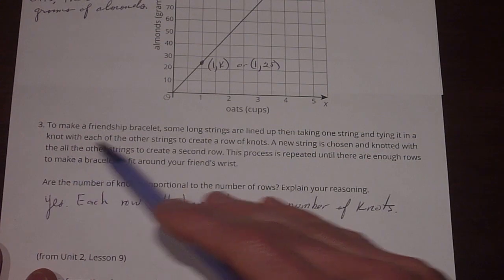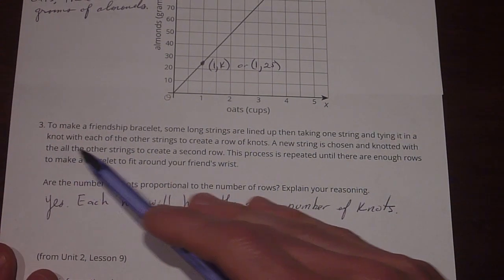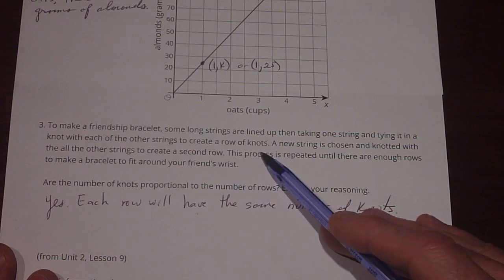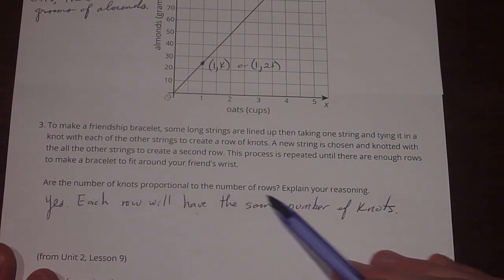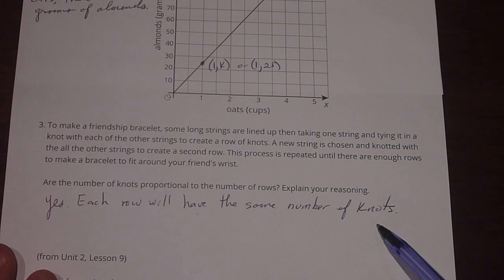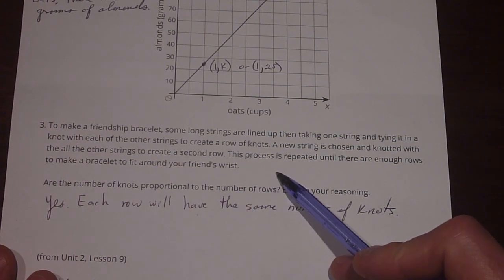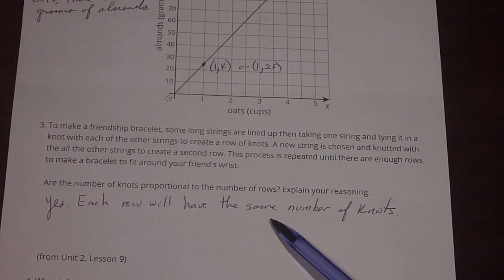Number three says, to make a friendship bracelet, some long strings are lined up and taking one string and tying it in a knot with each of the other strings to create a row of knots. So we read further on, are the numbers of knots proportional to the number of rows? Explain your reasoning. Yes, they are. Each row will have the same number of knots. So as you're tying the strings, it's going to be the same number of knots on every single row with different colors.